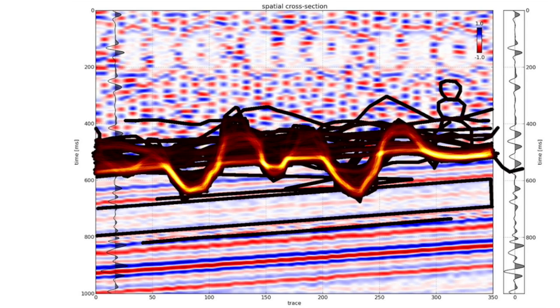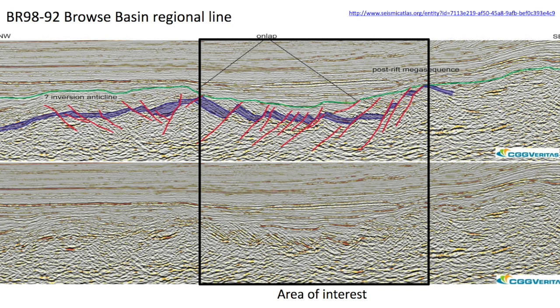We actually have a couple of researchers at the University of Aberdeen conducting some interpretation experiments with data from the Browse Basin and also from offshore Namibia. You're welcome to go and take part in those experiments. Go to pickthis.io, look at all the images, and find the ones from Browse and Namibia — you can take part in them right now.